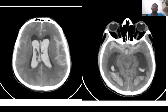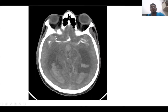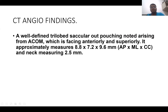In this case of bilateral intraventricular hemorrhage with subarachnoid hemorrhage, the cause was a cavernous hemorrhage measuring 8.8 x 7.2 x 9.6 mm.